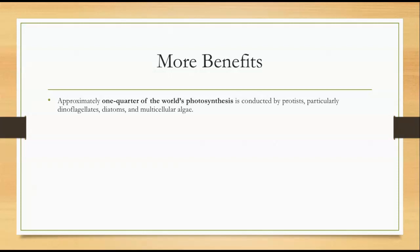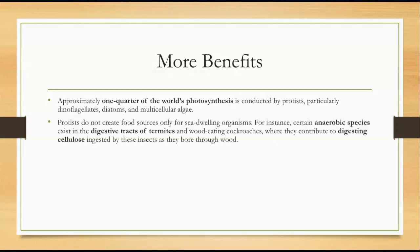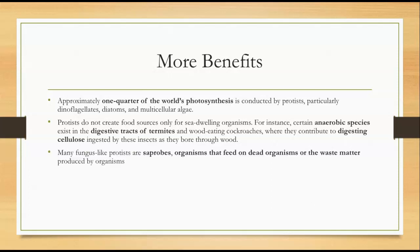Approximately one quarter of the world's photosynthesis is conducted by protists, particularly dinoflagellates, diatoms, and multicellular algae. They create food sources not only for sea-dwelling organisms — for instance, certain anaerobic species exist in the digestive tracts of termites and wood-eating cockroaches and allow them to digest cellulose, which most organisms can't digest. Those protists allow termites and wood-eating cockroaches to eat the wood they're boring through.